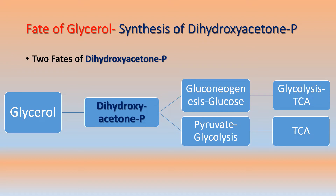The first fate is conversion of dihydroxyacetone phosphate into glucose through gluconeogenesis. This pathway operates when there is a deficiency of glucose and the cell requires a direct supply of glucose. So this dihydroxyacetone phosphate is converted into glucose, and further utilization of glucose is through the glycolytic pathway and then through the TCA cycle. If there is sufficient glucose at the cellular or tissue level, then dihydroxyacetone phosphate is converted directly into pyruvate through the glycolytic pathway.